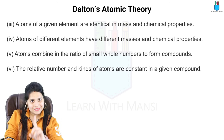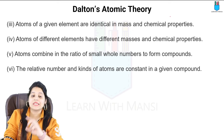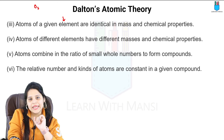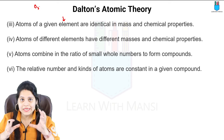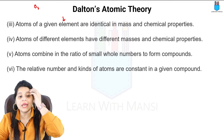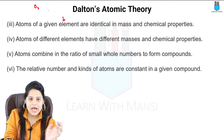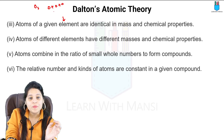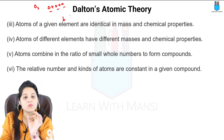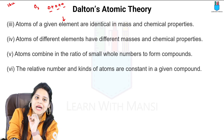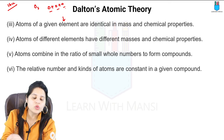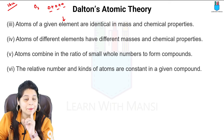Third point: atoms of a given element are identical in mass and chemical properties. For example, O3 — the three oxygen atoms here are identical in mass. The atomic mass is 16u. So they are identical in mass and chemical properties. These three atoms' chemical properties will be exactly the same. Here we are talking about the same element.